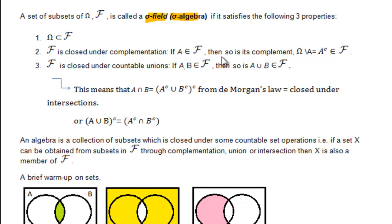So at first the definition may tell you nothing — in fact it's very vague — but when we apply it to a specific case you will see that it actually makes sense. A set of subsets of omega, curly F, is called a sigma field or sigma algebra if it satisfies three properties.